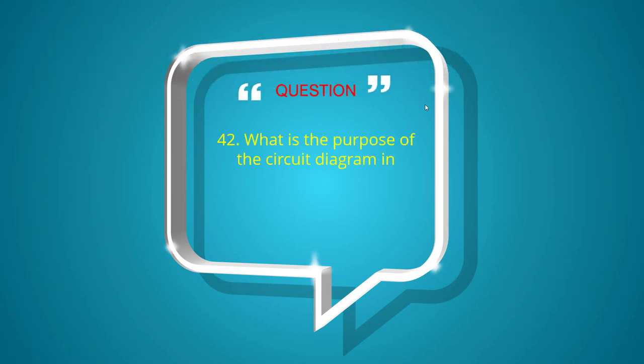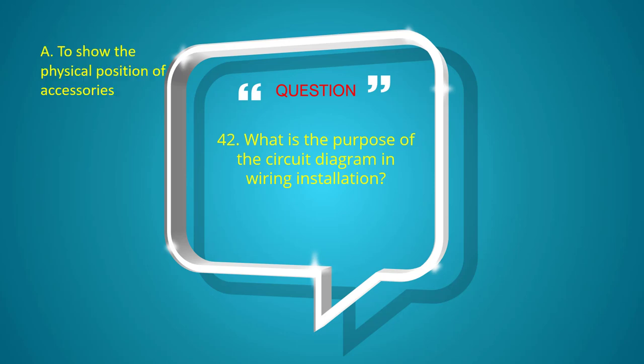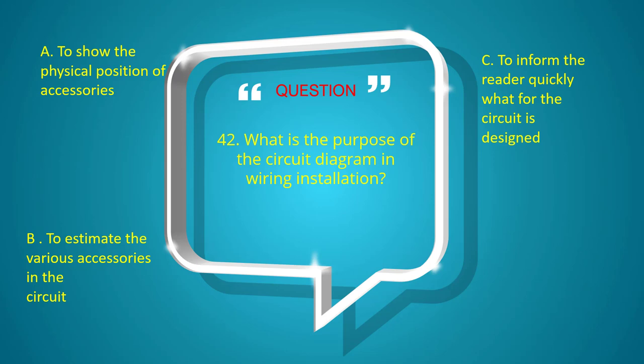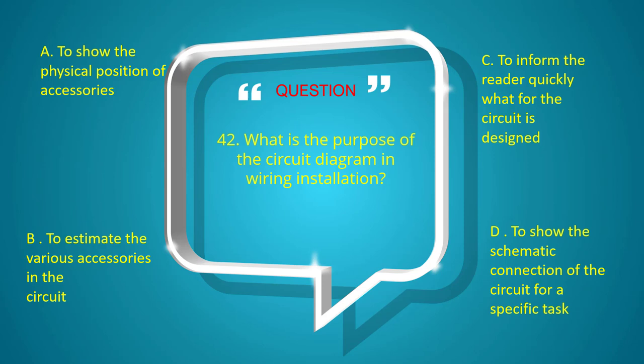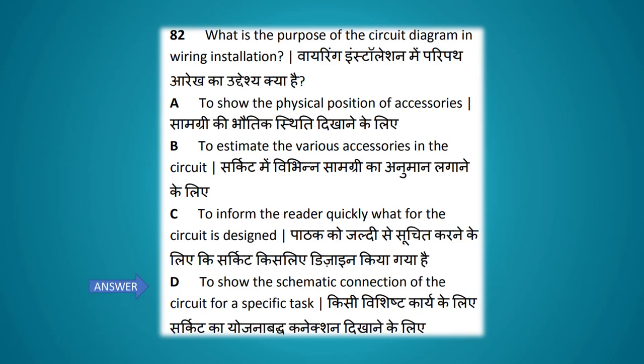What is the purpose of the circuit diagram in wiring installation? Options: to show the physical position of accessories, to estimate the various accessories in the circuit, to inform the reader quickly about what the circuit is designed for, to show the schematic connection of the circuit for a specific task. The answer is to show the schematic connection of the circuit for a specific task.